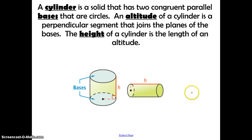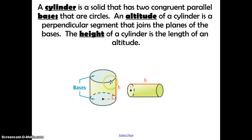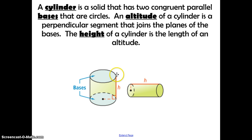A cylinder is a solid that has two congruent parallel bases that are circles. Cylinders are very similar to prisms, except their bases are always going to be circles. An altitude of a cylinder is the perpendicular segment that joins the planes of the bases, and the height of the cylinder is the length of that altitude — the segment that joins the two bases.